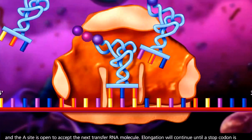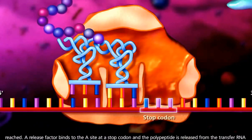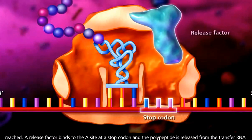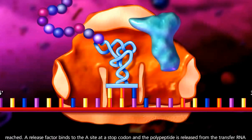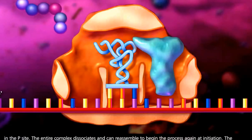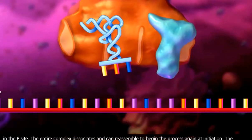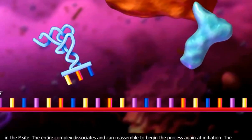Elongation will continue until a stop codon is reached. A release factor binds to the A site at a stop codon and the polypeptide is released from the transfer RNA in the P site. The entire complex dissociates and can reassemble to begin the process again at initiation.